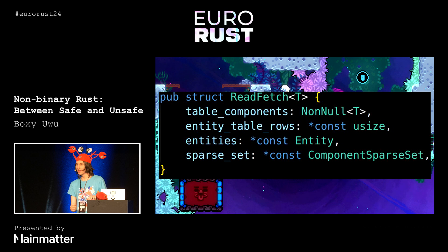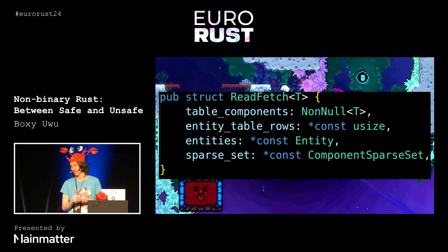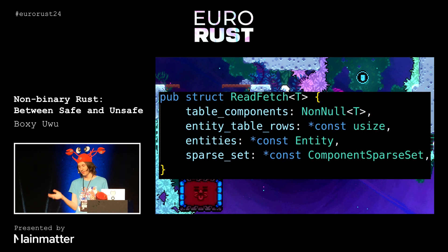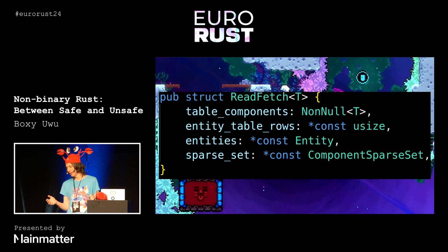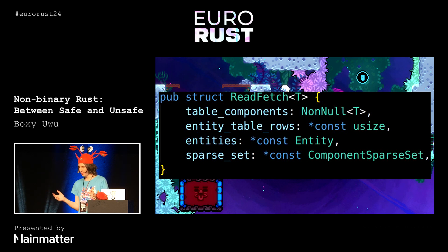There's one more example of this kind of abstraction from Bevy — we had this type that was constructed many, many times constantly. We have these raw pointers, and in this case we actually do know what we're pointing to: a pointer to a usize, a pointer to an entity, a pointer to a sparse set. The only thing that seems to be missing is that we don't have a lifetime — so is that the reason we're using raw pointers here?